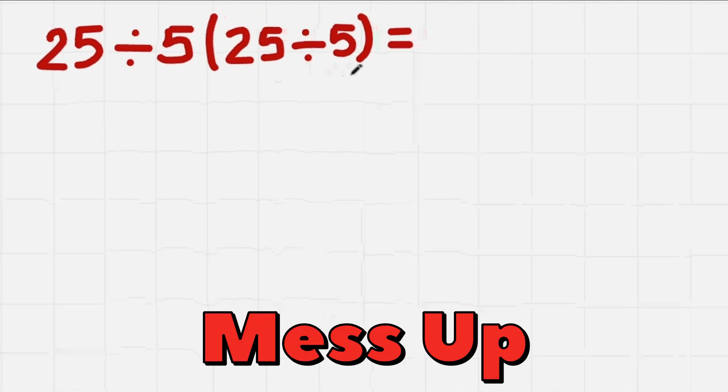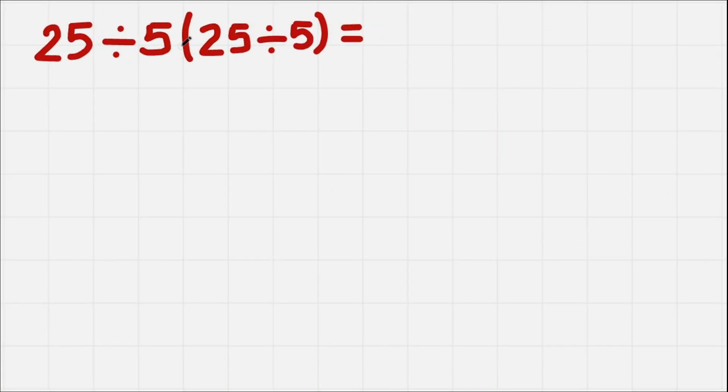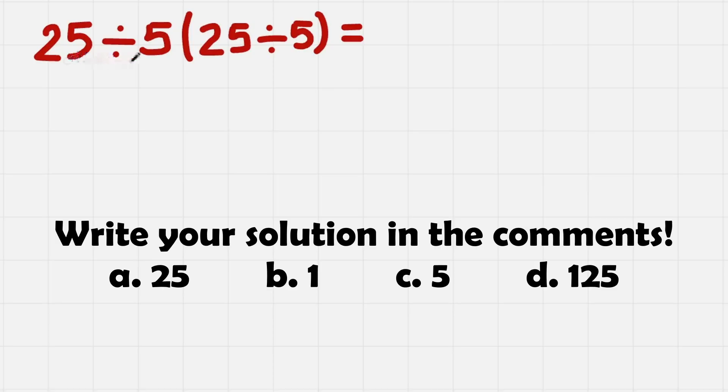This equation makes people mess up with all of those parentheses and divisions and also multiplications, but I'll tell you tricks to not mess up ever. So we have 25 divided by 5 times parenthesis 25 divided by 5.